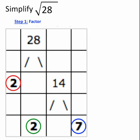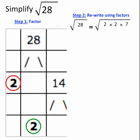Now that I have those factors, I can rewrite the original expression using them. The square root of 28 is equal to the square root of the product of its factors: 2 times 2 times 7.